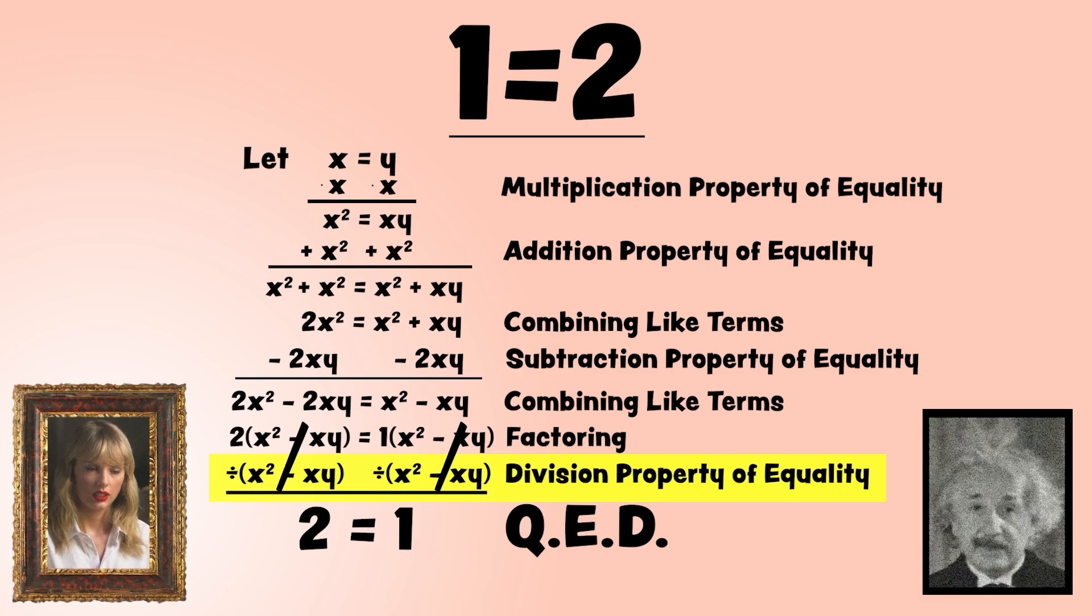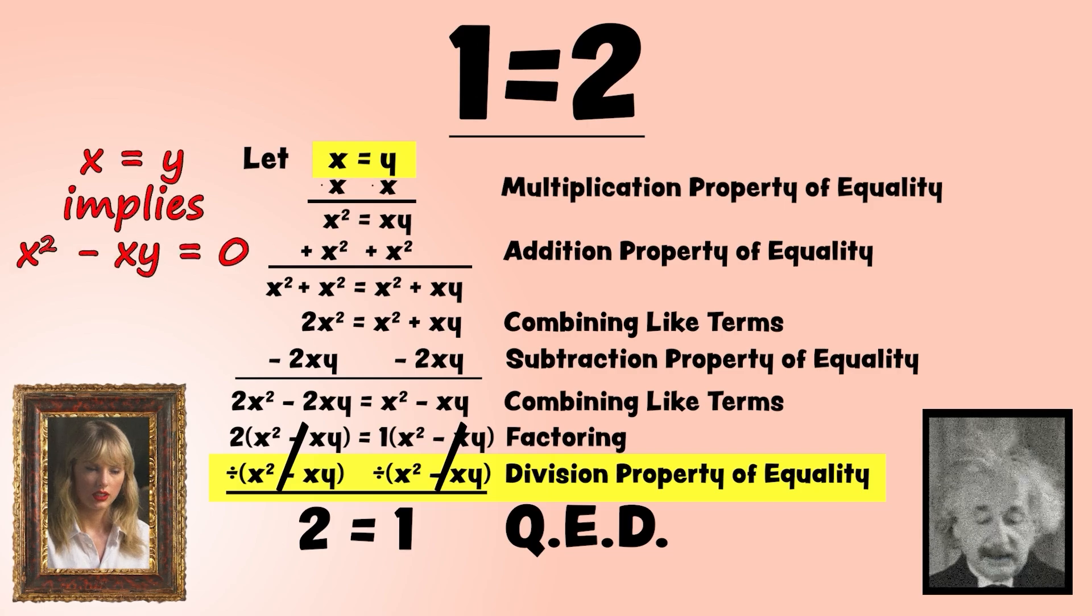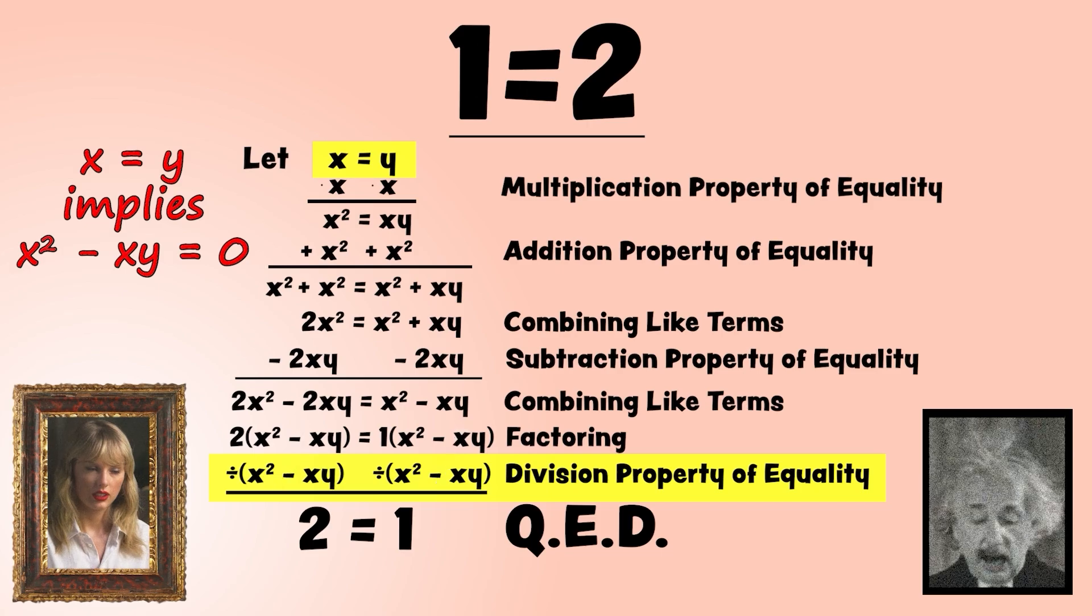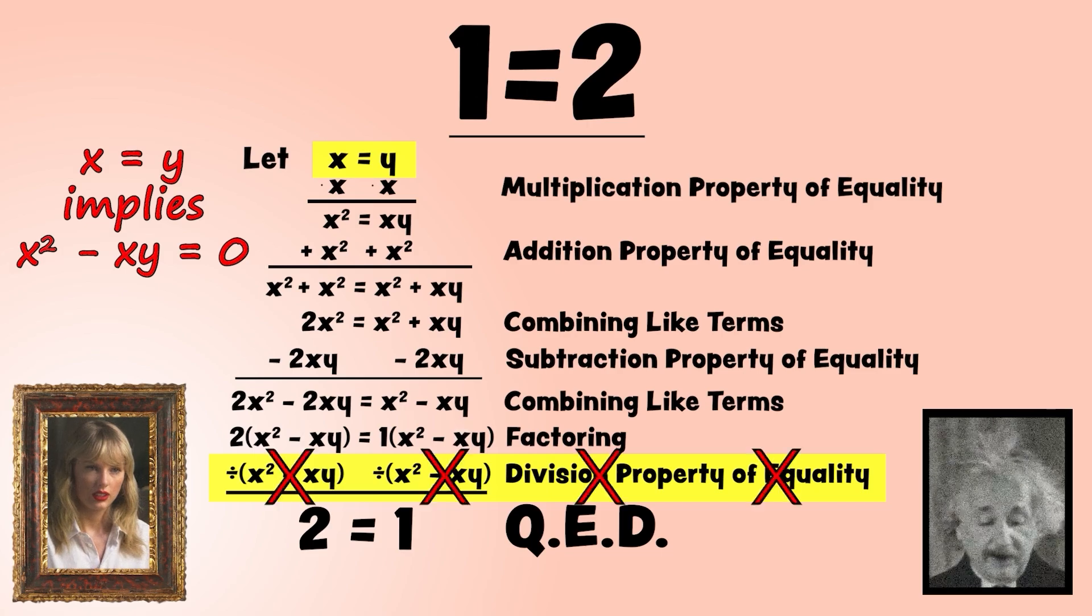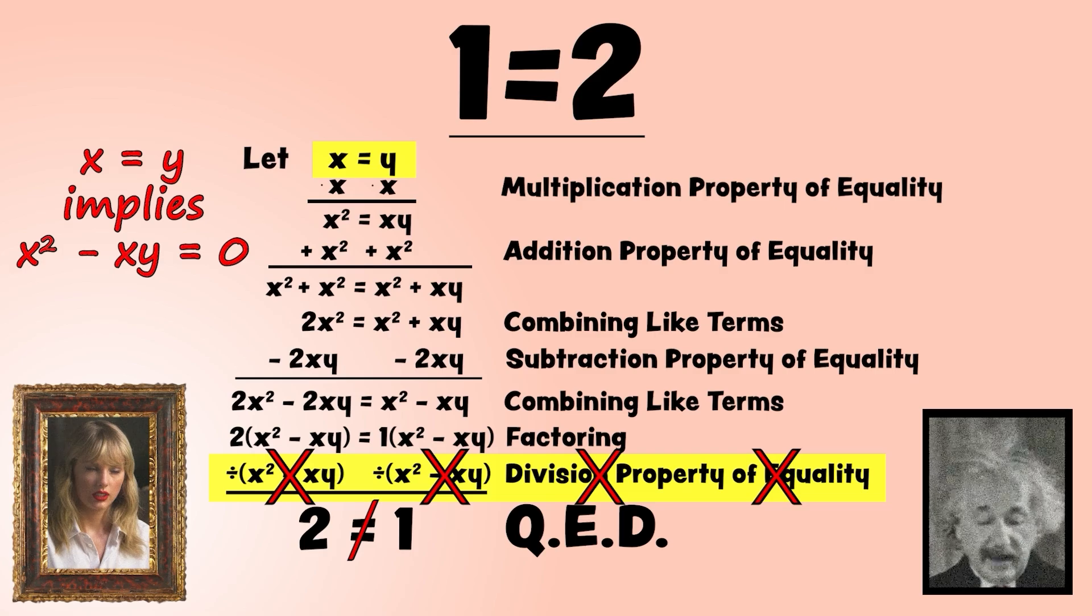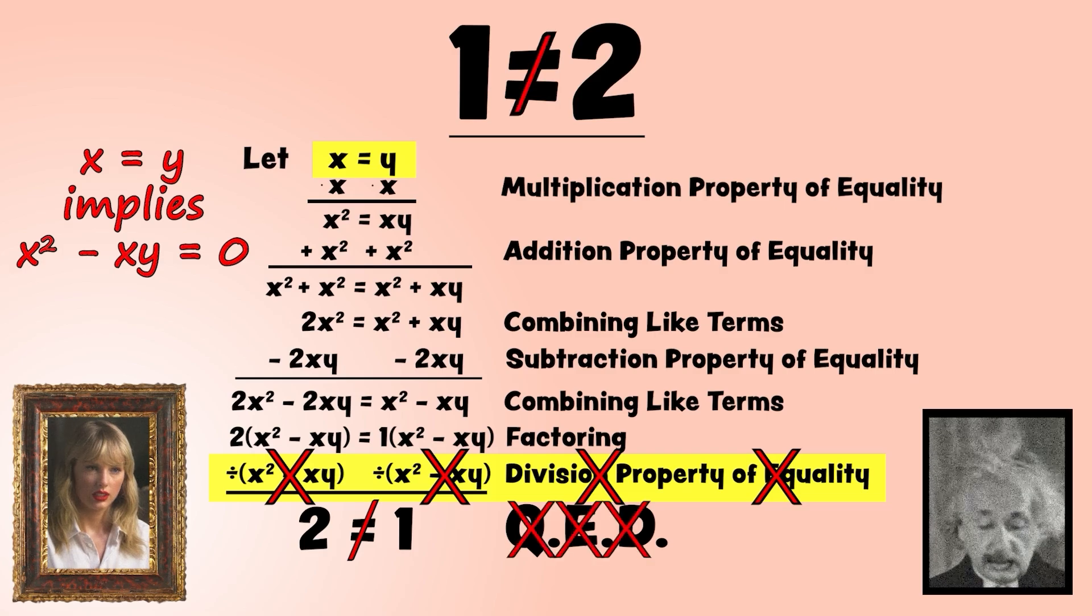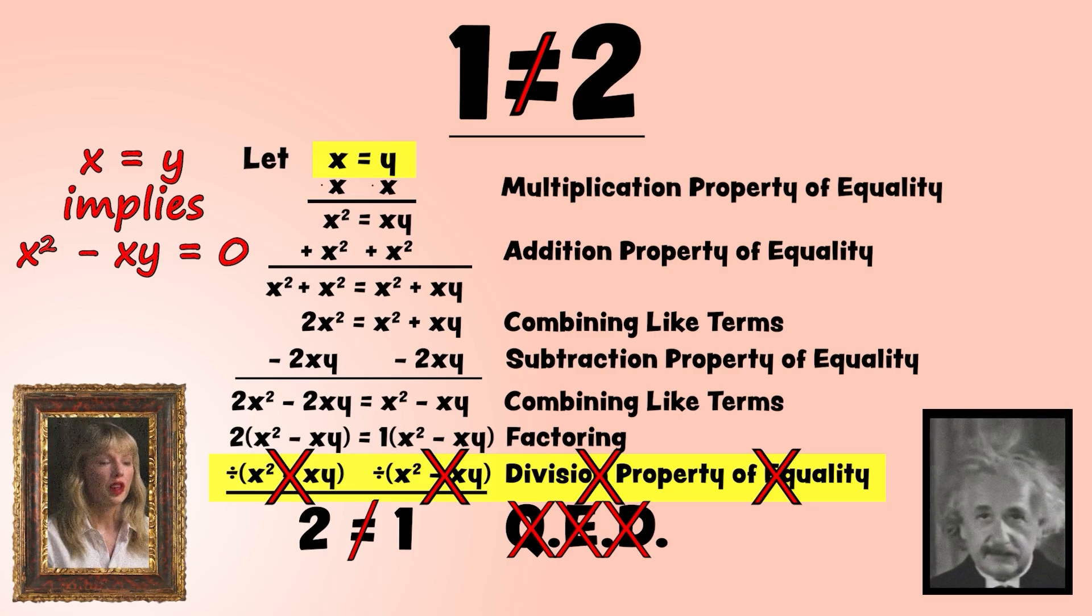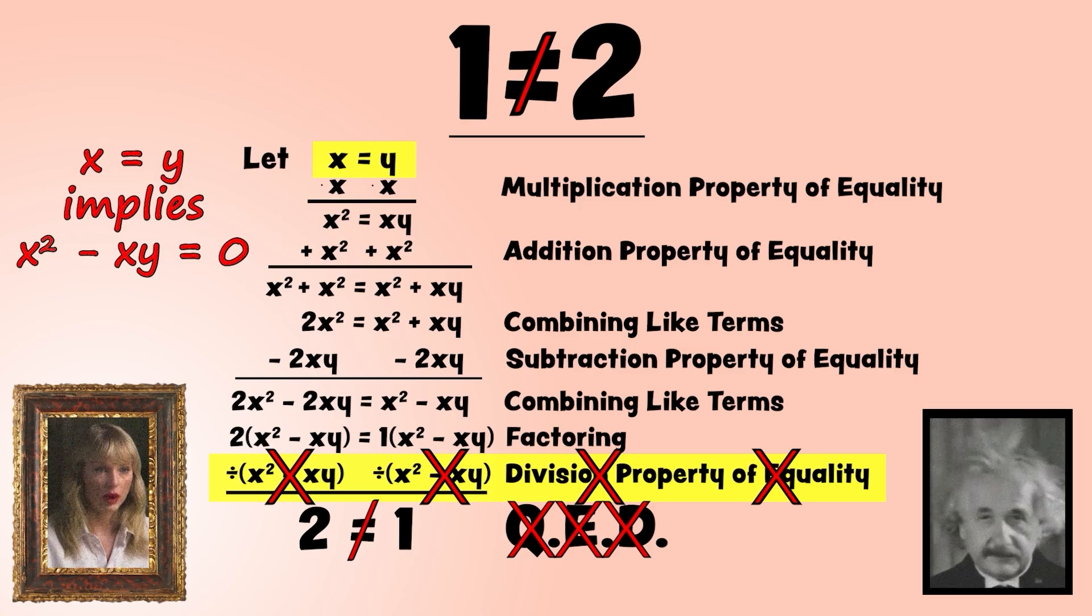Since your initial assumption said that x equals y, then x squared minus x times y must equal zero. And we all know you cannot divide by zero. I'm sorry, Ms. Swift, but I am going to have to put you on an indefinite hiatus until you can come back with a video worthy of this YouTube channel. Well, I guess I'll just have to go work on some polynomial approximations.